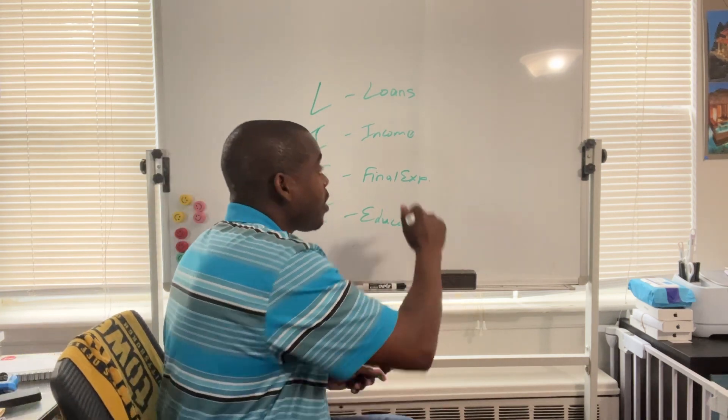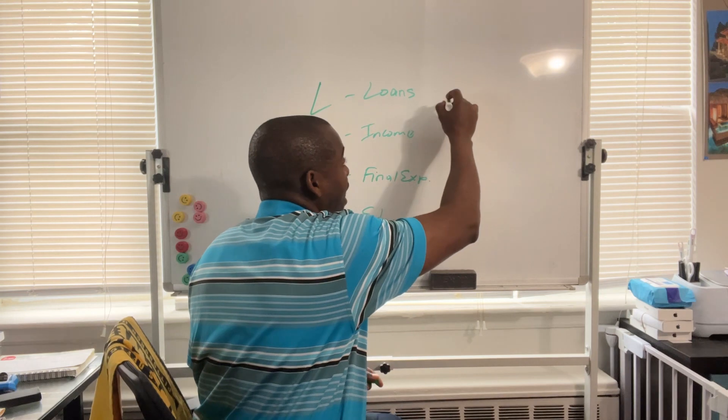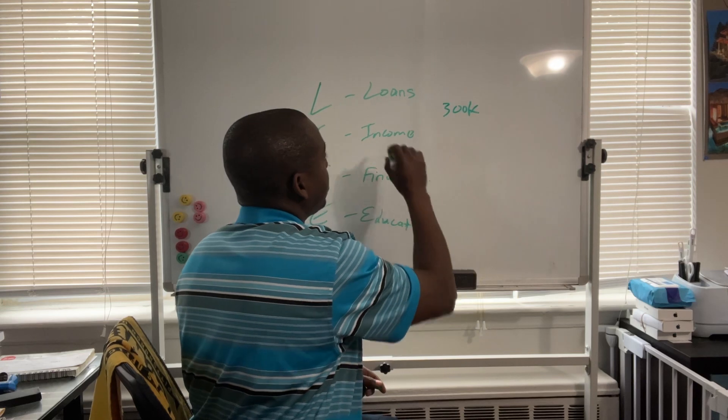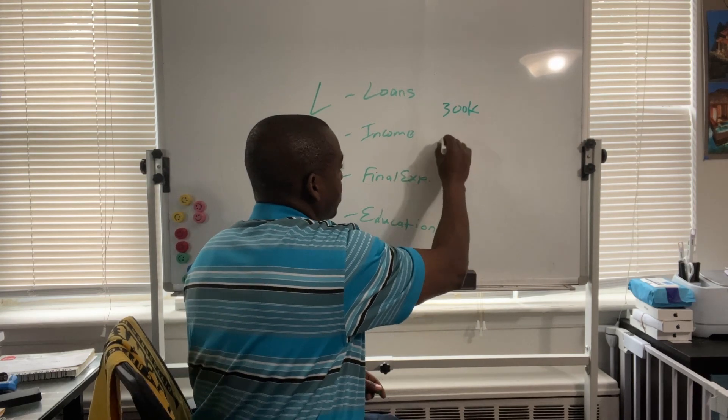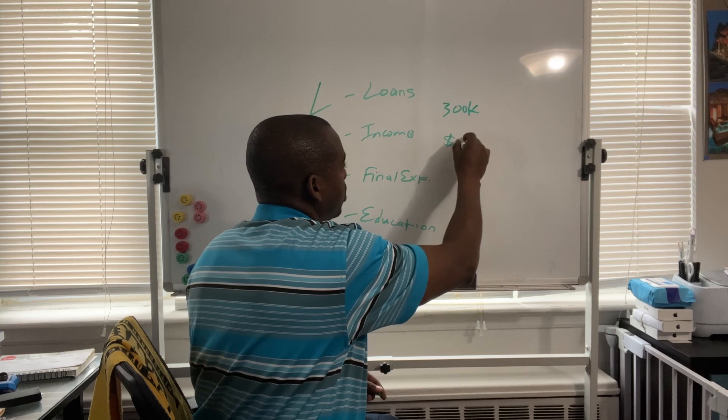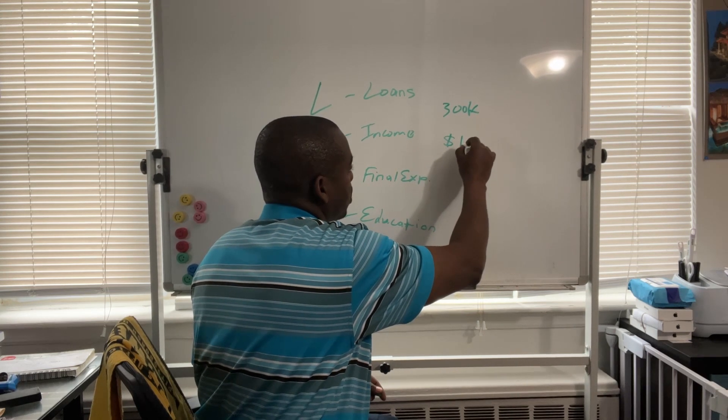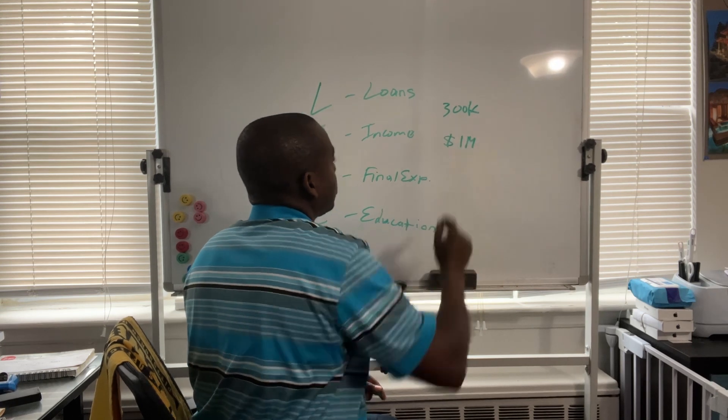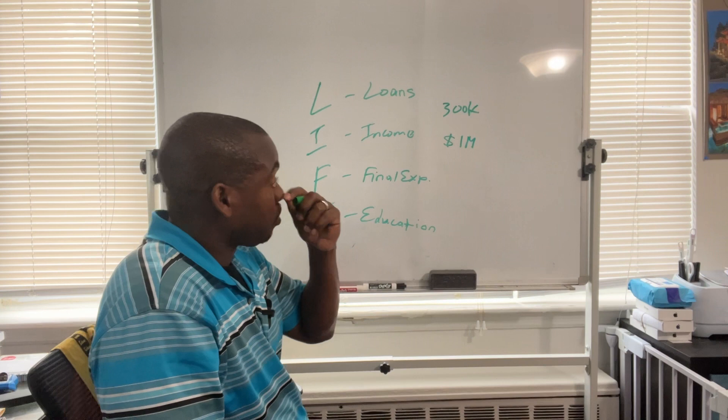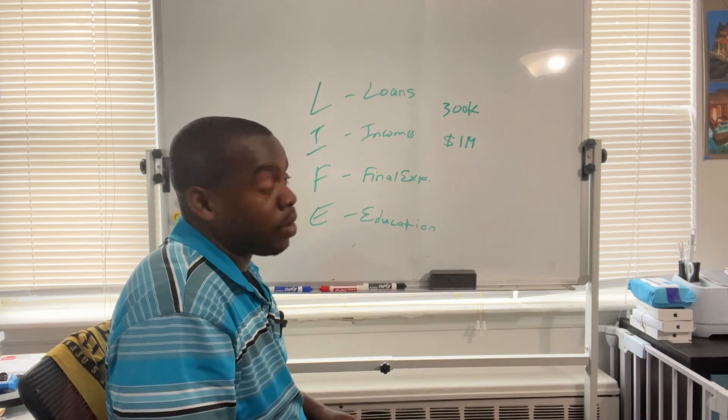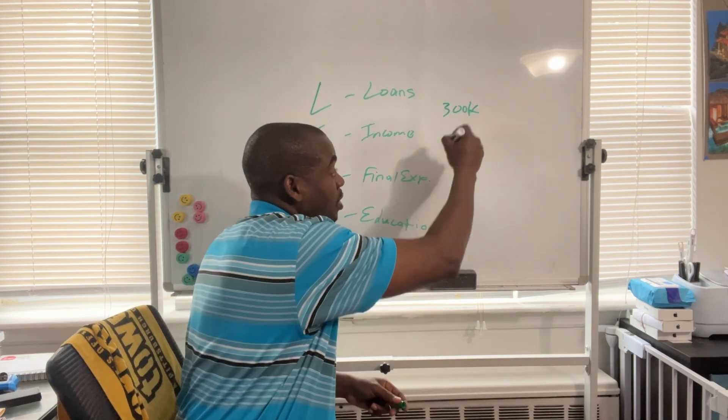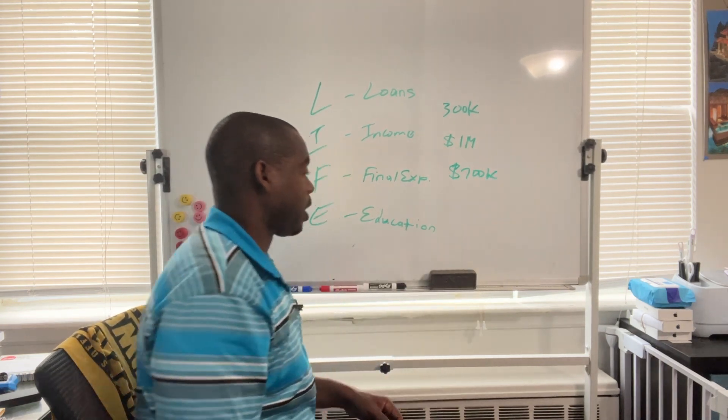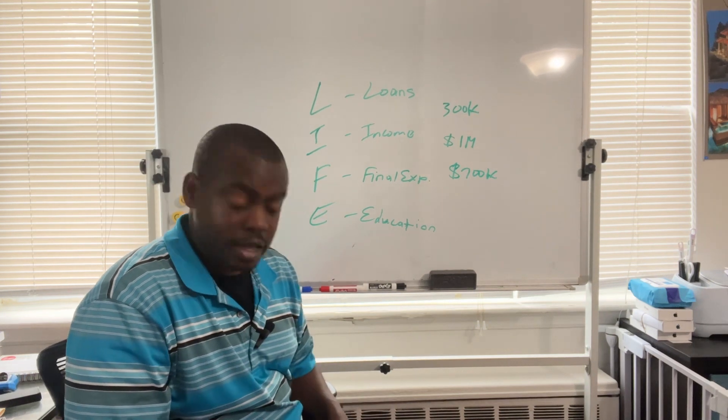Let's say your assets is 300k. And when you add up all this you get 1 million. So when you add up 1 million and you have 300k, you subtract the 300k from the 1 million - you need 700k of protection. That's an example of how it will work.